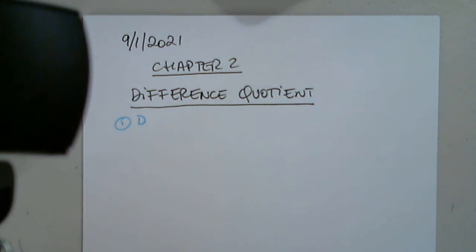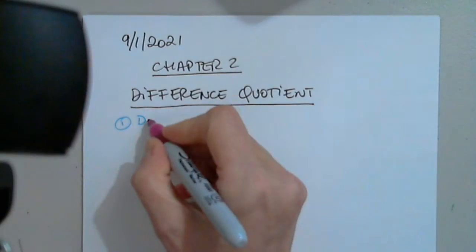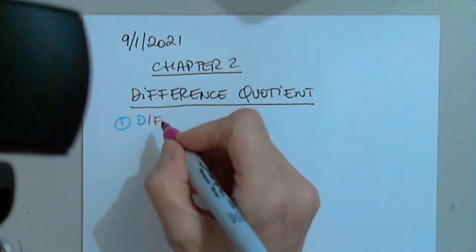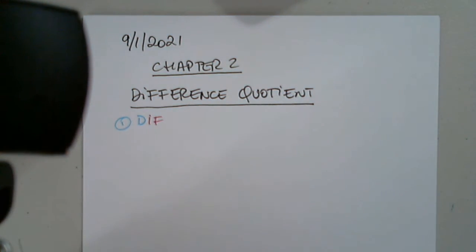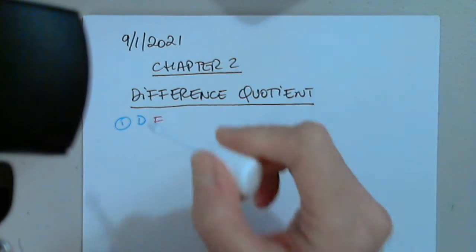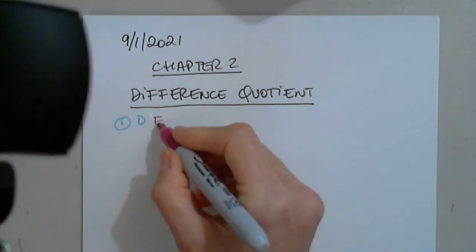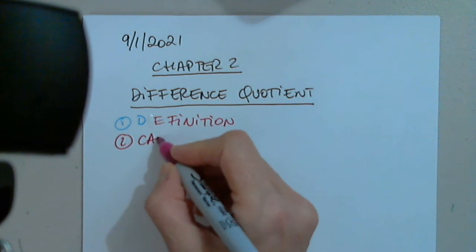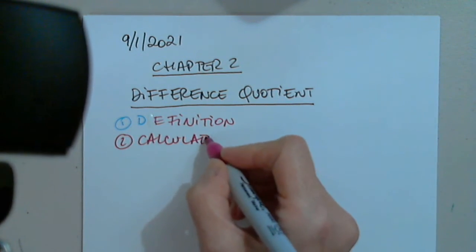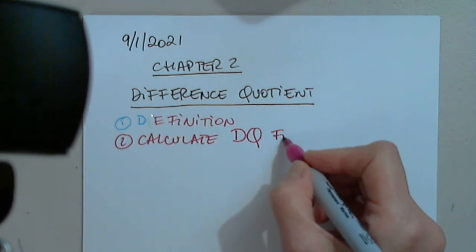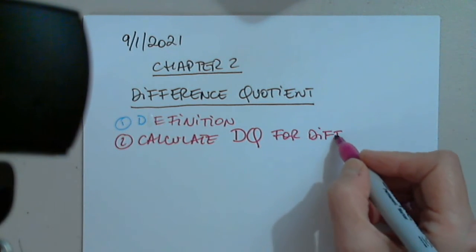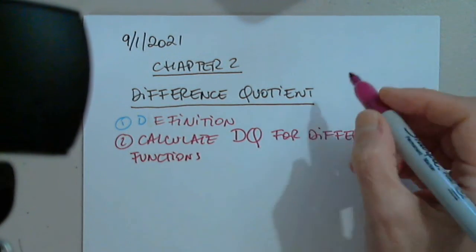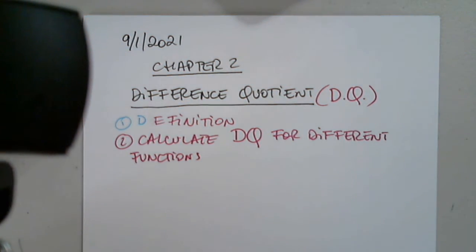If a color is not good enough, please let me know. So definition first, and number two, calculate the difference quotient for different functions.